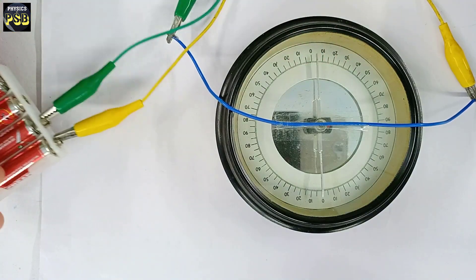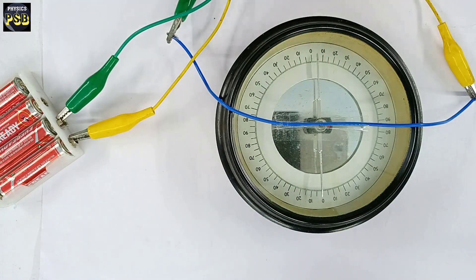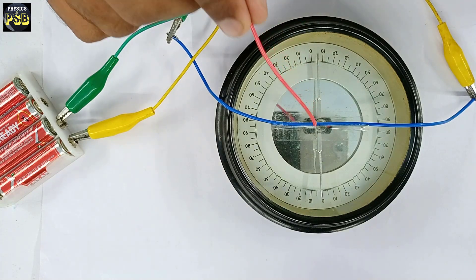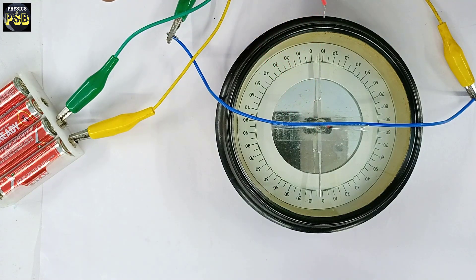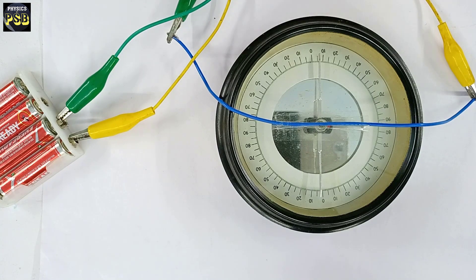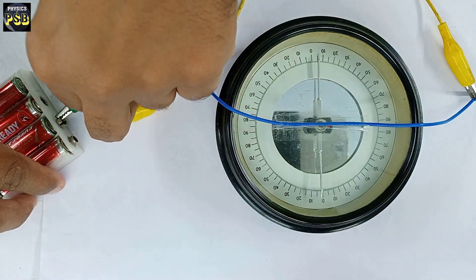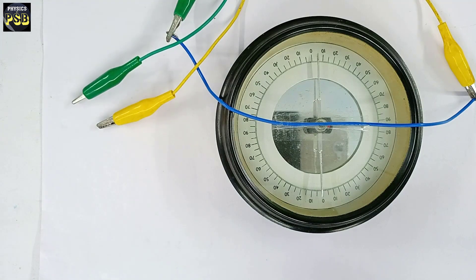When I do so you may observe the aluminum pointer shows deflection. Now it reads around 6 degrees. Now I am going to pass current of around 2 ampere.